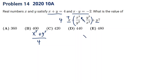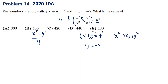We know x plus y is 4 and x times y is negative 2. If we square x plus y, we get x squared plus 2xy plus y squared equals 16. Since 2xy is negative 4, we move it to the other side and get x squared plus y squared equals 20.